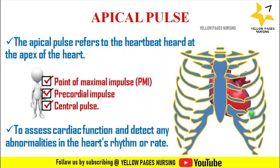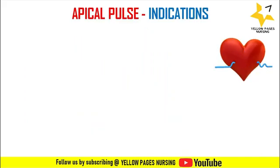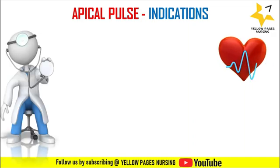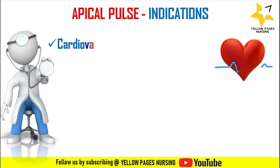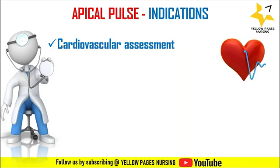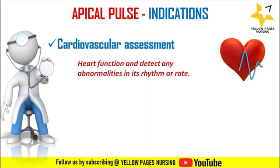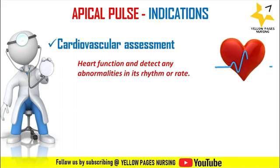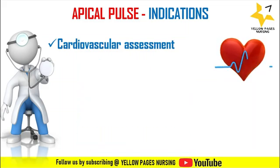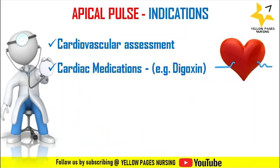Next are the indications for apical pulse. Assessment of the apical pulse is indicated for cardiovascular assessment — the heart's function is mainly assessed by apical pulse — and also to detect any abnormalities in its rhythm or rate. It also has a significant role in detecting and managing conditions such as arrhythmias, heart failure, and valve disorders.